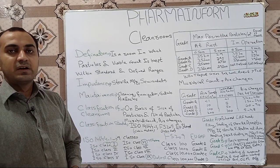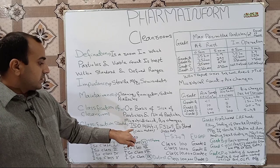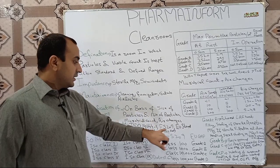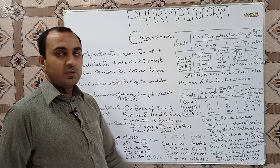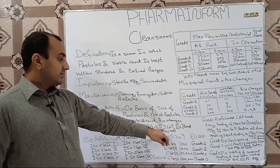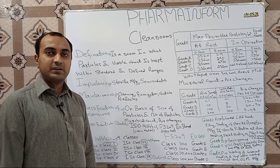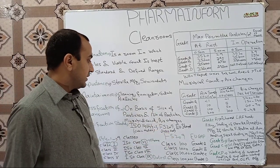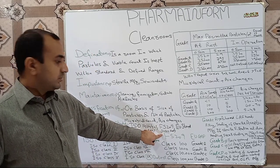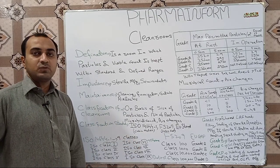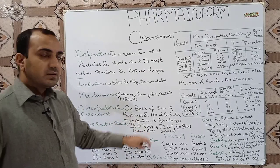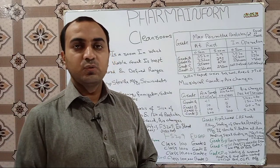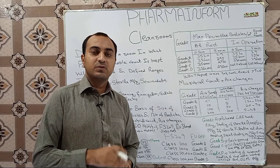How are clean rooms classified? Clean rooms are classified according to the ISO 14644-1 standard, the FS 209 standard, and the EU or European standard. FS 209 is not in practice nowadays — it has been replaced by ISO. The basic difference was that in FS 209 we counted particles per cubic feet, but in ISO we count particles per cubic meter.